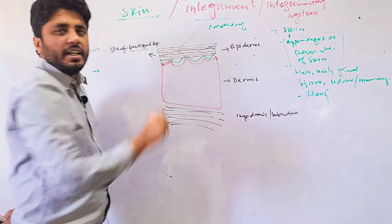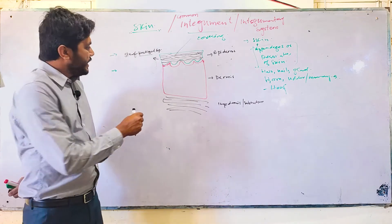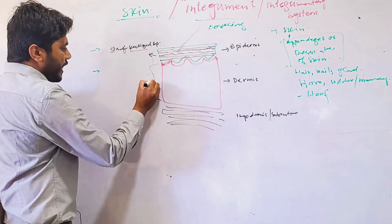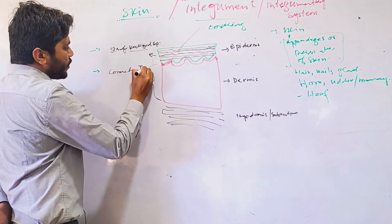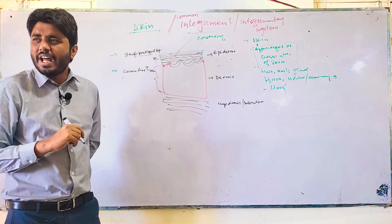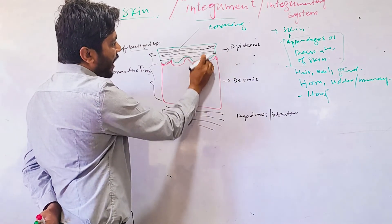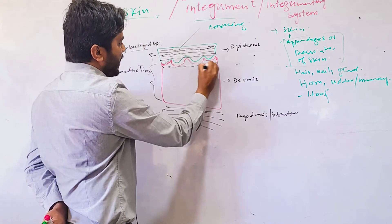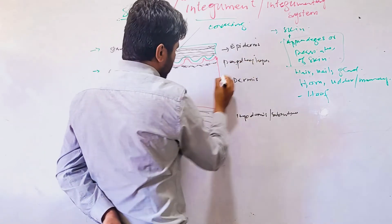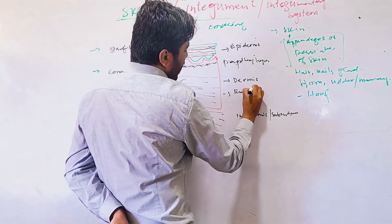The upper layer is the epidermis. The lower layer, the dermis, is also divided into two sub-layers. The dermis is connective tissue — mostly irregular dense connective tissue. The upper portion attached to the epidermis is known as the papillary layer, and the lower remaining area with regular reticular fibers is known as the reticular layer.